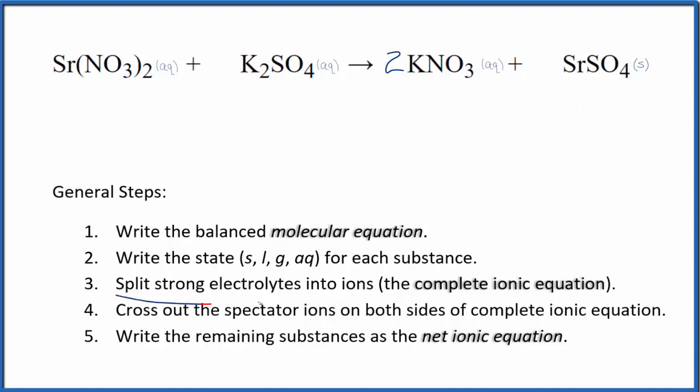Now that we have the states, we can split the strong electrolytes into ions for the complete ionic equation. The strontium, that's going to be 2+. It's in group two, and the whole nitrate is always 1-. We have two of them. So we'll have our strontium ion, and I'll write aqueous later. Plus, we'll have two of those nitrate ions, NO3-.